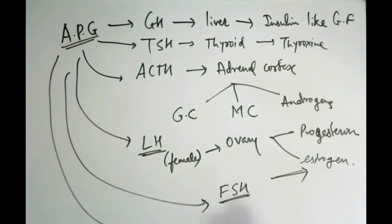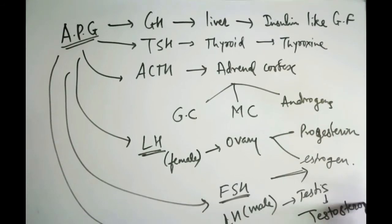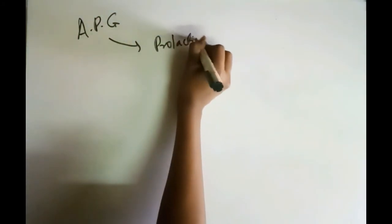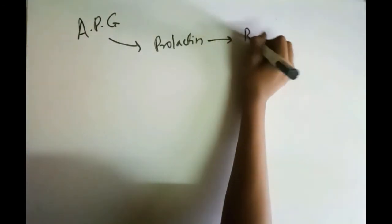Then the next hormone is LH in male. This is released from testis and it releases testosterone. And the last hormone which is released from APG is prolactin which is released from breast.